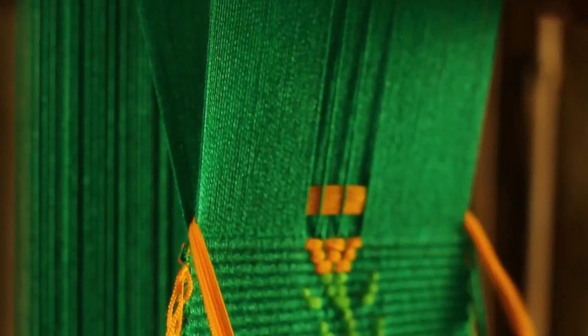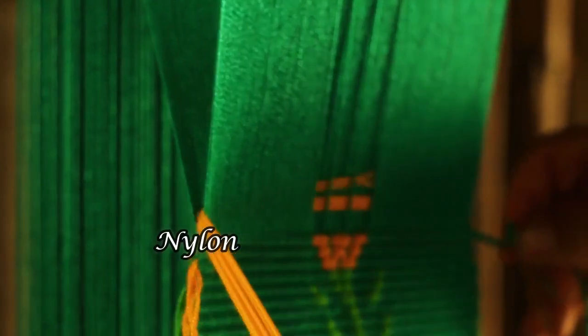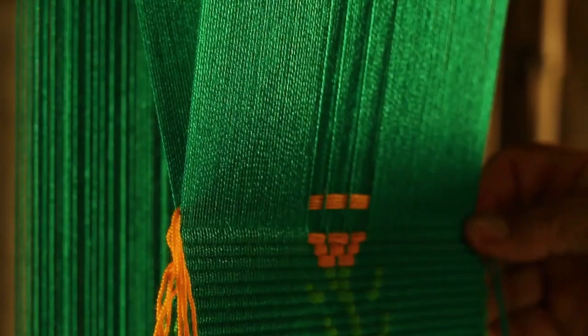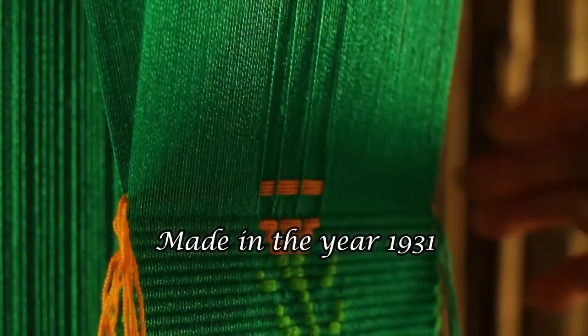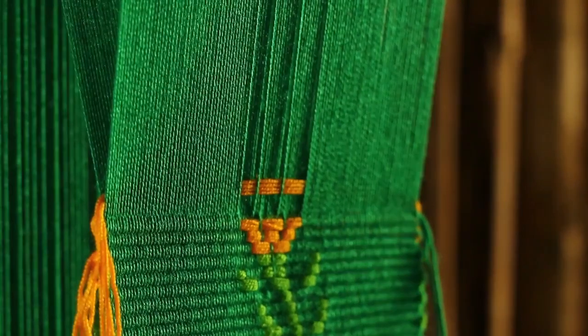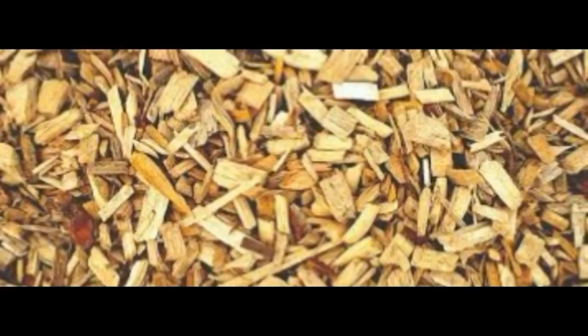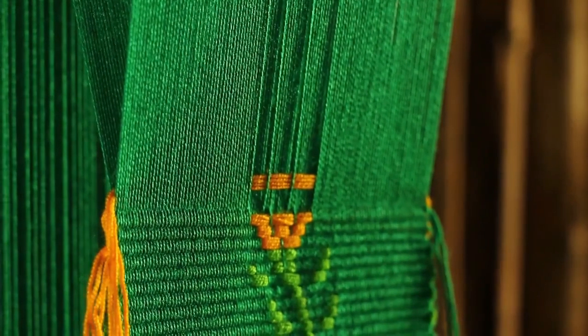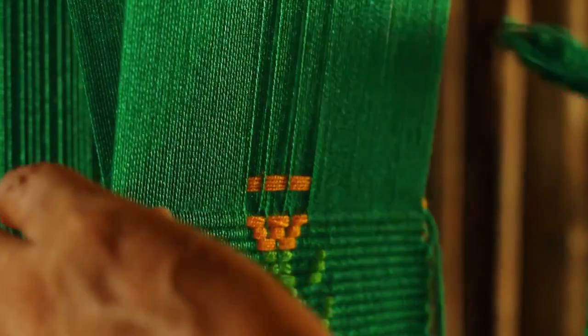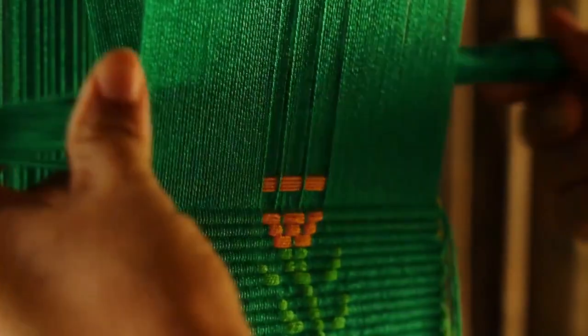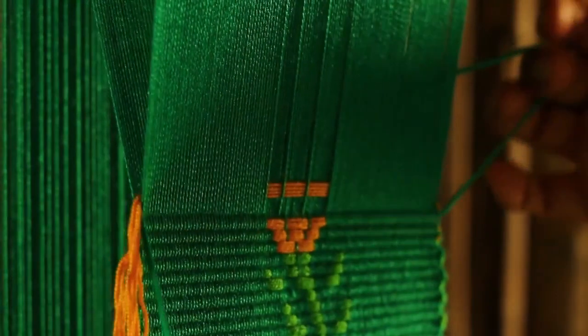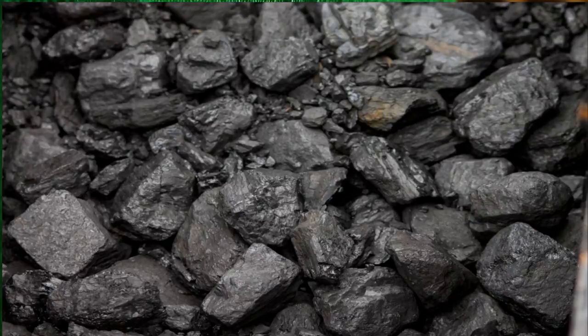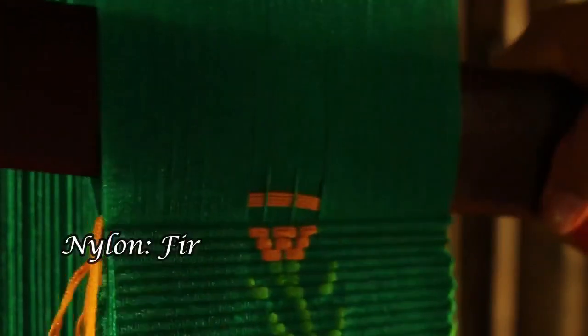The second type of synthetic fiber is nylon. You must have heard this name. Nylon is another man-made fiber. In 1931, it was made without using any natural material. In the previous case, rayon was made using wood pulp, but nylon is man-made. The raw material used here is coal, water, and air. This is the first fully synthetic fiber.